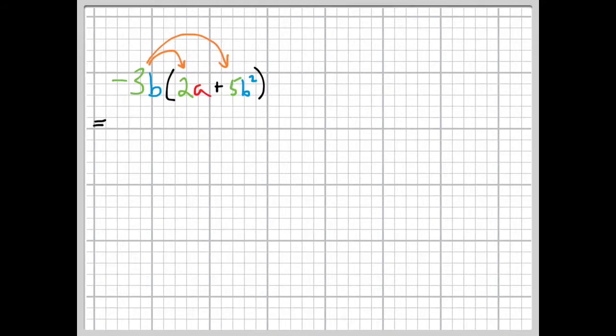So, we get negative 3b times 2a plus negative 3b times 5b squared. Negative 3b times 2a, the numbers multiply together, so we get negative 6, and then we just have a b and an a along for the ride, multiplying in.